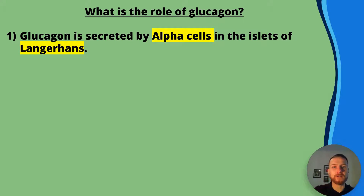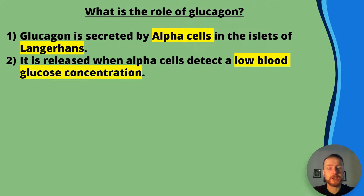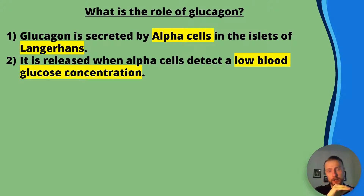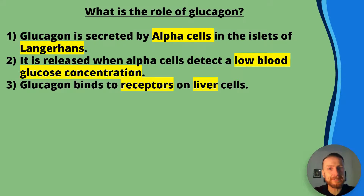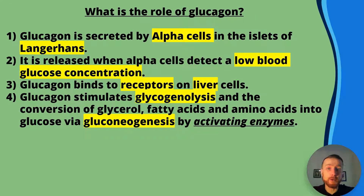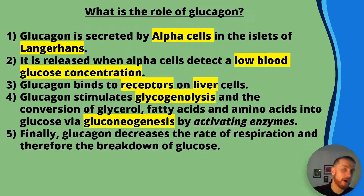What is the role of glucagon? Glucagon is secreted by alpha cells in the islets of Langerhans — remember, glucagon has an A in it and so does alpha cells. It is released when alpha cells detect a low blood glucose concentration. Glucagon binds to receptors on liver cells and stimulates glycogenolysis, the conversion of glycogen to glucose. It also stimulates the conversion of glycerol, fatty acids, and amino acids into glucose via gluconeogenesis, and it does this by activating enzymes. Finally, glucagon decreases the rate of respiration and therefore the breakdown of glucose.